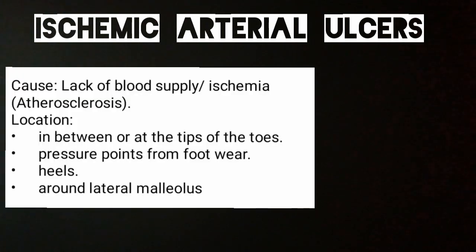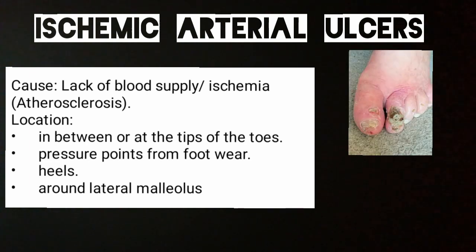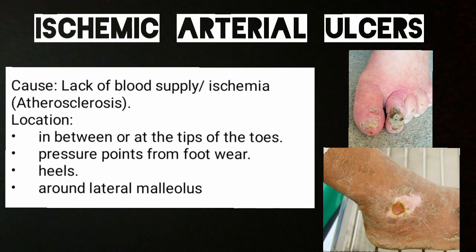Arterial ulcers are also called ischemic arterial ulcers because they are caused by ischemia. In ischemia, blood supply does not reach the tissue — the skin tissue — or it can be due to blockage of blood vessels. When a blood vessel is blocked, the skin will not receive blood or nutrients, and ultimately necrosis or ulcer formation will occur. Blockage of blood vessels is most commonly caused by arterial sclerosis. The location of arterial ulcers can be the tip of toes, pressure points from footwear, heels, or around the lateral malleolus.